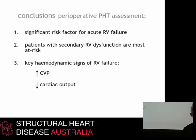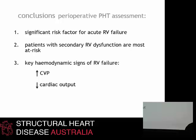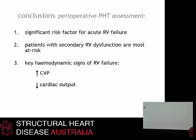To conclude, severe pulmonary hypertension is a significant risk factor for acute right ventricular failure in patients undergoing both major cardiac and non-cardiac surgery. Although there is limited evidence to formally support this, in my experience it is the patients with secondary RV dysfunction that are most at risk. The patient with very severe RV dysfunction shown earlier actually had to be crashed onto bypass as part of her PTE procedure. The key haemodynamic signs of right ventricular failure are an increased CVP and a decreased cardiac output — so if you have a patient with pulmonary hypertension undergoing major non-cardiac surgery, you must measure CVP and some measure of cardiac output.